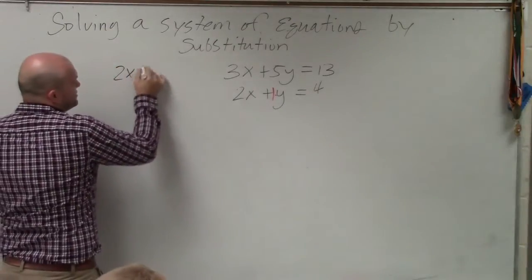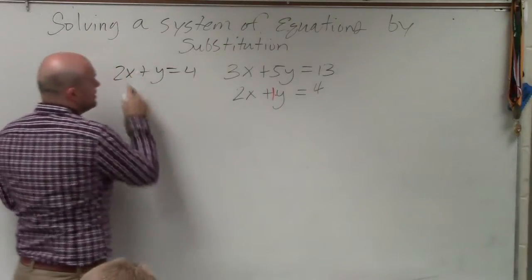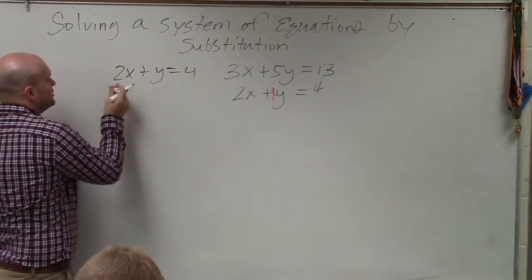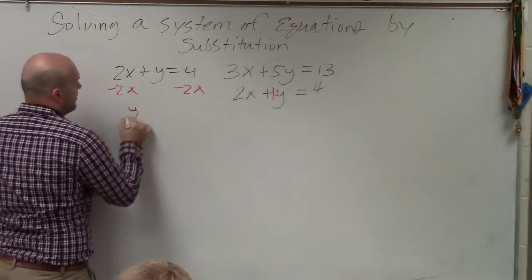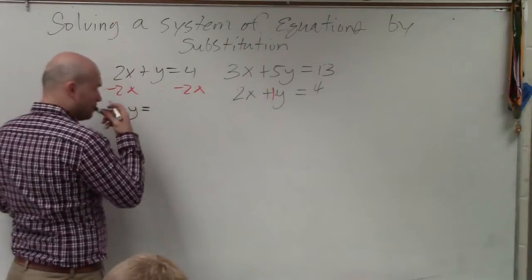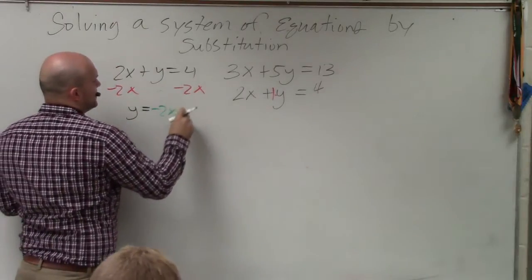So I basically just go over here and say 2x plus y equals 4. To solve for y, all I simply need to do is subtract the 2x. And therefore, I obtain y equals negative 2x plus 4.